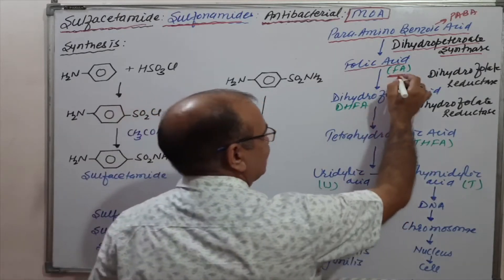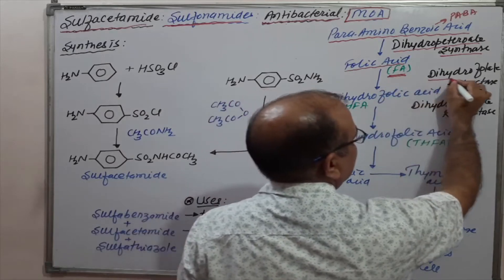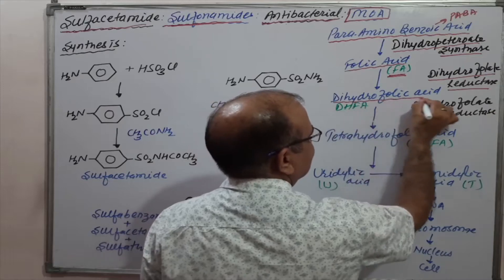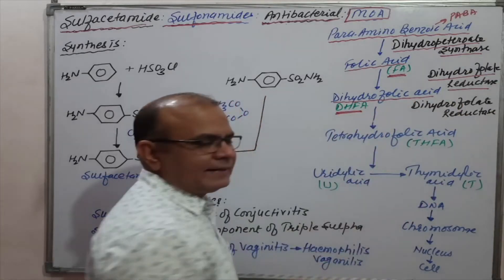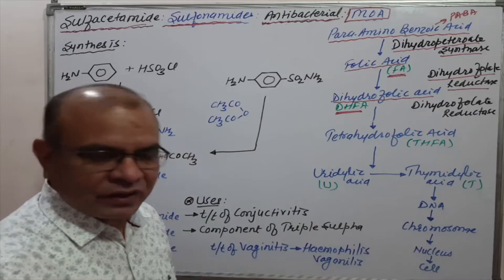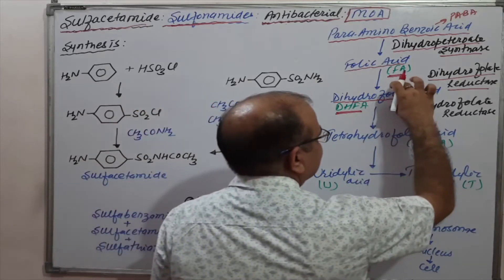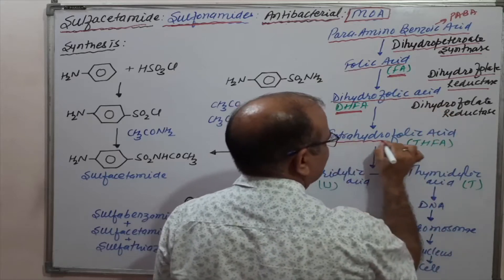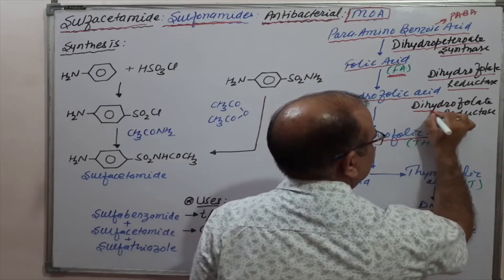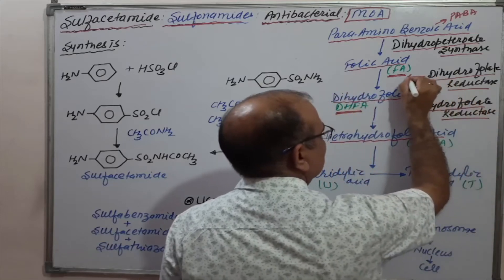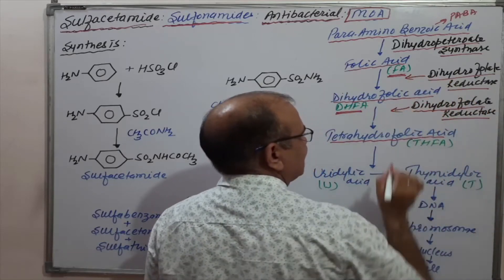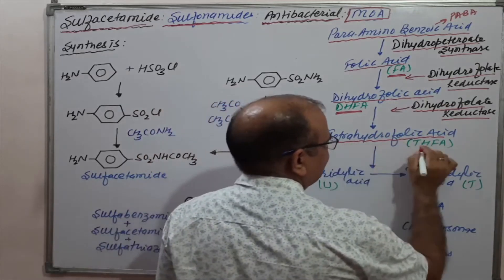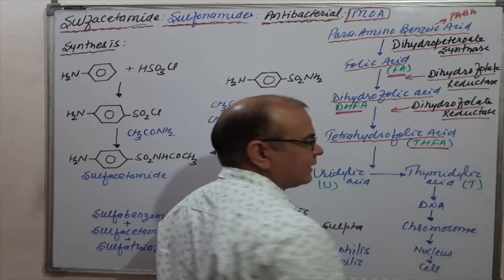Folic acid, abbreviated as FA, is reduced by dihydrofolate reductase into dihydrofolic acid, abbreviated as DHFA. That DHFA is again reduced to tetrahydrofolic acid in presence of dihydrofolate reductase. At both steps, the same enzyme is present. Tetrahydrofolic acid is abbreviated as THFA.